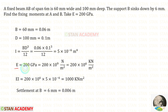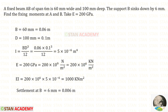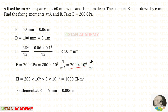The Young's modulus E is 200 gigapascal. Since giga is 10⁹ and pascal is N/m², we convert to kilonewtons per meter squared by dividing by 1000, giving 200 × 10⁶ kN/m². Multiplying Young's modulus with the moment of inertia gives EI = 1000 kN·m².